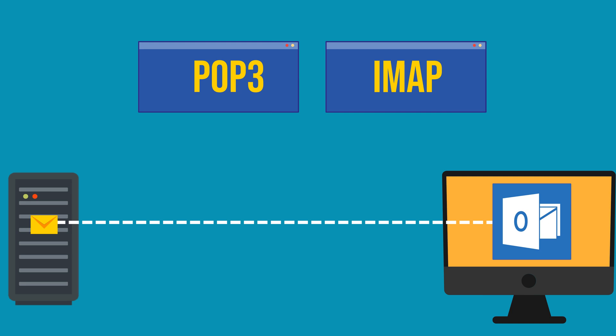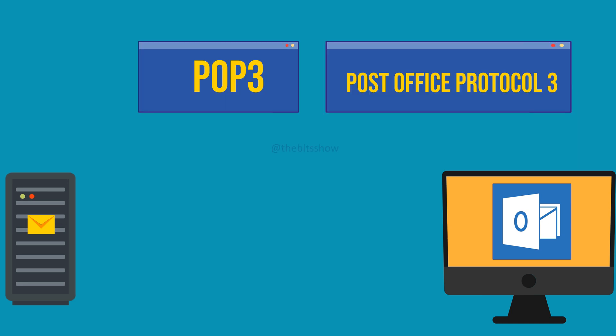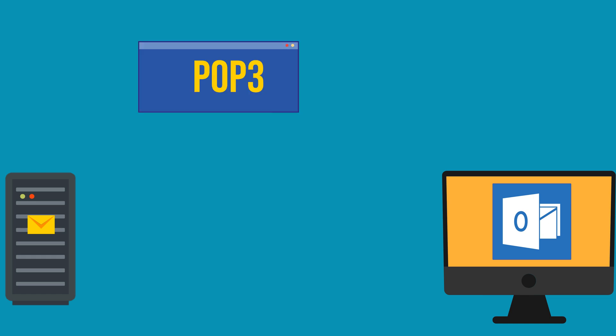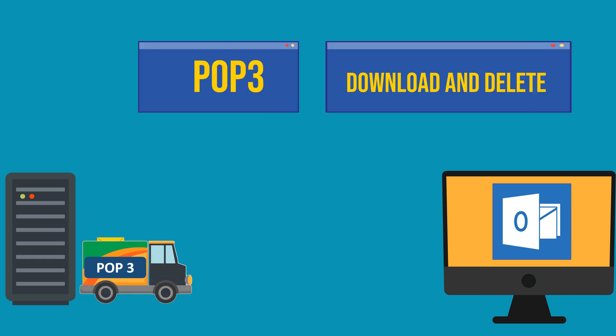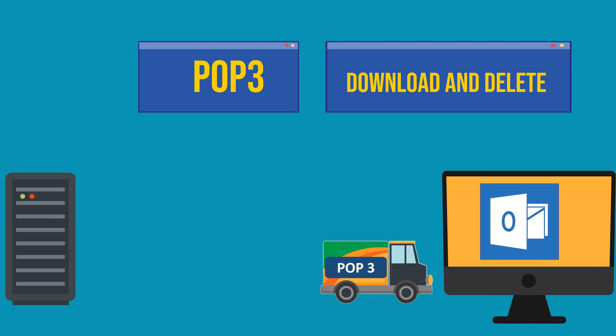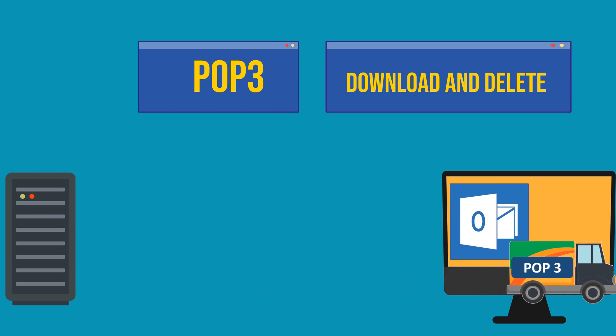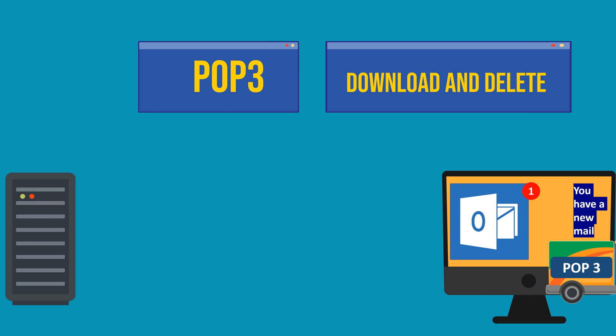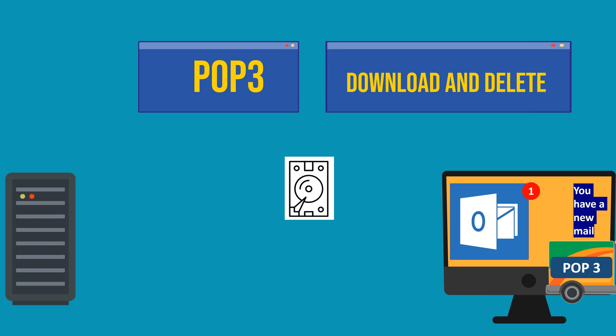First, there's POP3, or Post Office Protocol 3. POP3 operates on a download and delete model. When you configure your email client with POP3, it connects to your mail server, retrieves emails, and typically removes them from the server unless specified otherwise. This is comparable to collecting mail from a post office box, taking it home, where the letters are no longer present in the post office box. Your emails are stored locally on your device, allowing you to access them even offline.